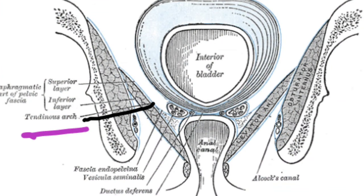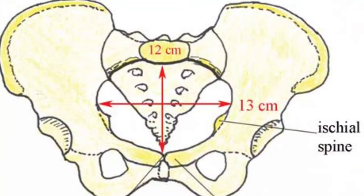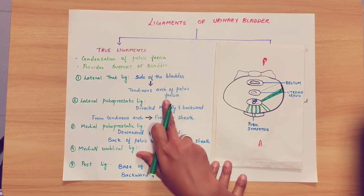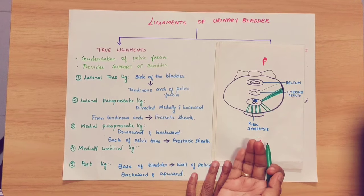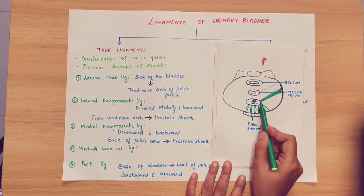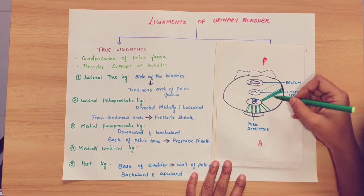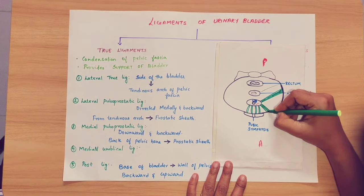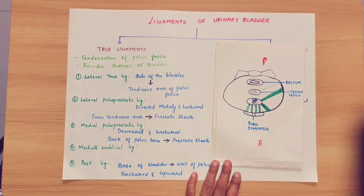The tendinous arch of the pelvic fascia is a tendinous arch from which muscles and ligaments originate. As you can see in this diagram, in the pelvic bone at the ischial spine of the ischium bone, the pelvic bone is connected to the fascia — we call this the tendinous arch of the pelvic fascia. So the side of the bladder is connected to the tendinous arch, and this ligament is called the lateral true ligament.